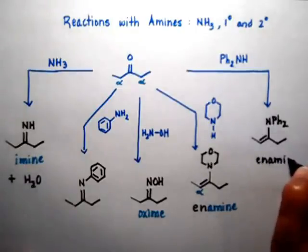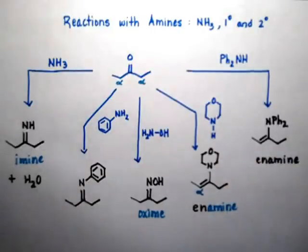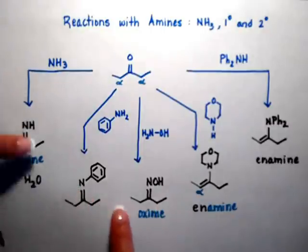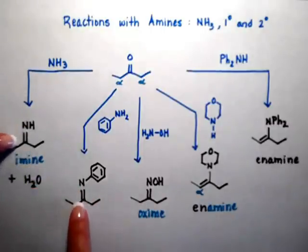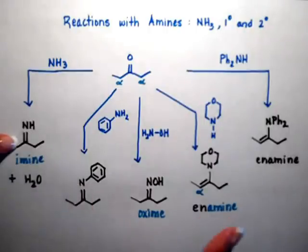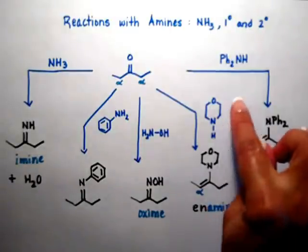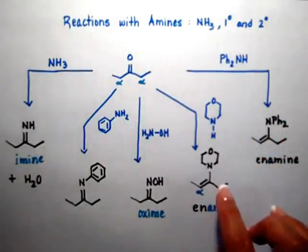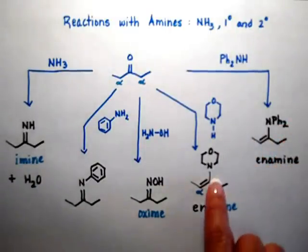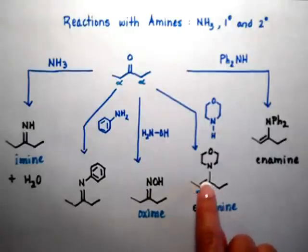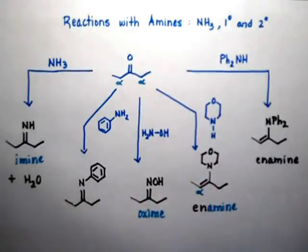When reacting with amines, the important thing is counting the number of hydrogens on your nitrogen. If you have two — as in these three examples — the double bond is going to stay where the carbonyl had it: take the oxygen off and substitute it with the nitrogen. If your nitrogen has only one hydrogen, the double bond is going to shift between the carbon of the carbonyl and one of the alpha carbons. That's it.